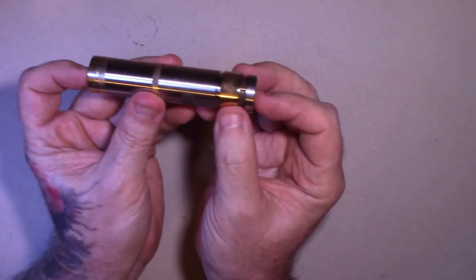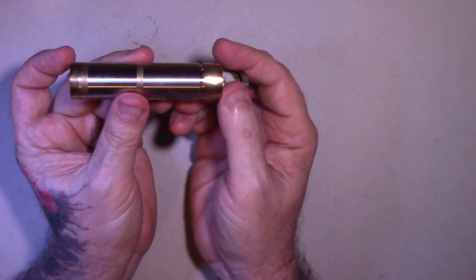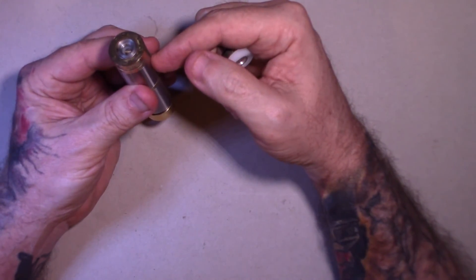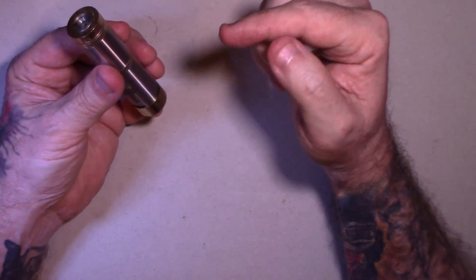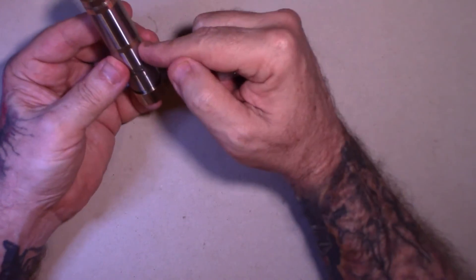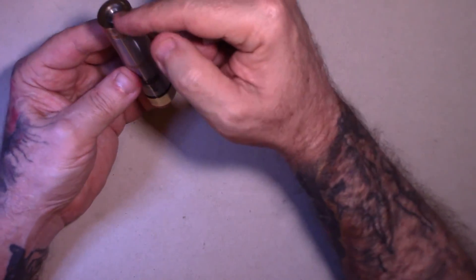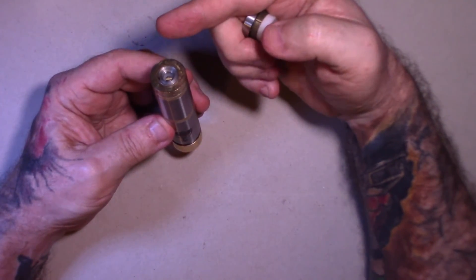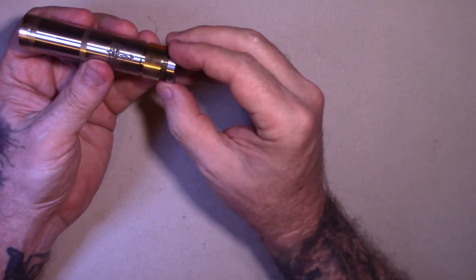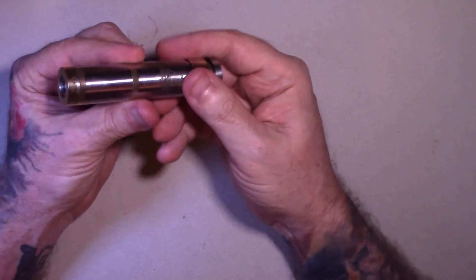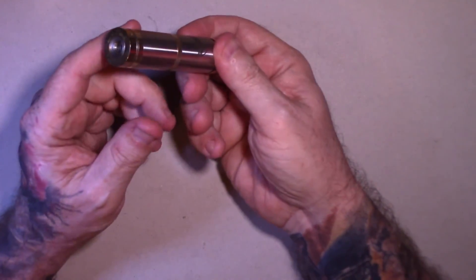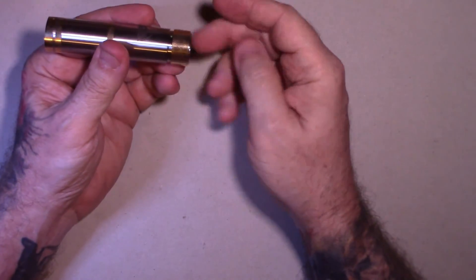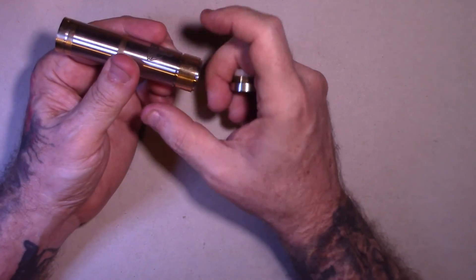When you push the button, boom, circuit. It does not regulate anything. Depending on what battery you put in here, what output you are going to get to your device, to your tank. That is an unregulated mod. It is basically you are holding a battery in your hand and using it to fire the coils in your tank or RDA or whatever you are using.